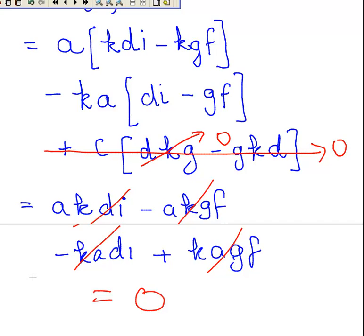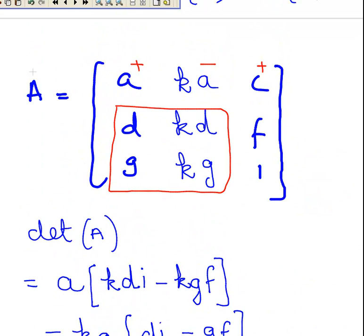I could have picked any other row or column, but essentially no matter which way we do it, it would have worked out the same — we would have had zero. So that's some linear algebra proofs: the proofs for zero determinants.